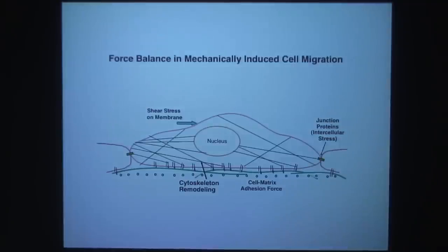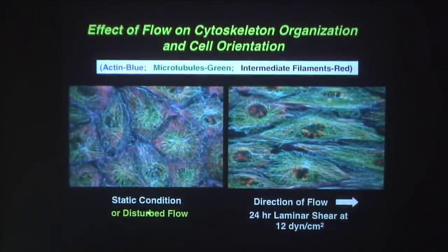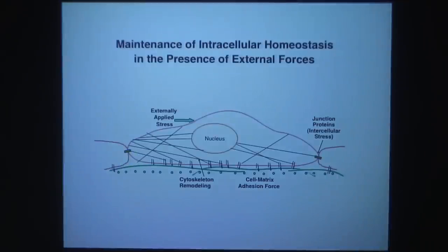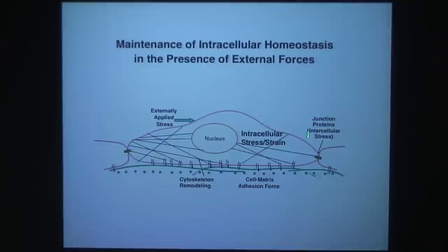As force is applied, we can also affect cytoskeletal remodeling. Without force, or with disturbed flow, the orientation of stress fibers, actin, microtubules, and intermediate filaments is random. But with 24 hours of laminar flow, the stress fibers and other cytoskeletal elements become oriented parallel to the direction of flow. So the application of external stress changes the internal stress and strain, including cytoskeletal remodeling.